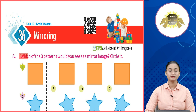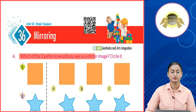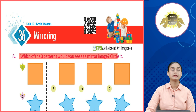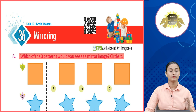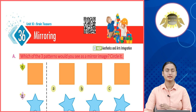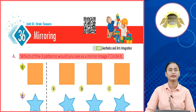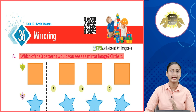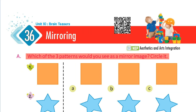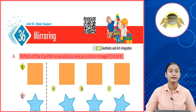A. Which of the three patterns would you see as a mirror image? Circle it. Toh aapko ek side image dhe rakhye aur teen options dhe rakhye. Aapko batana hai ki agar iske saamne aap mirror rakhengye toh ye kaisi dikhai dhengye. Number one pe hai aapka square — toh ye match karayega option number A se.